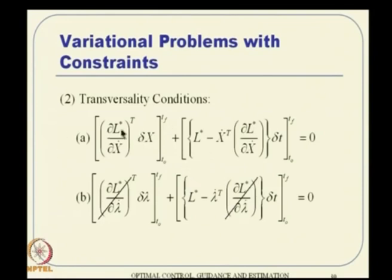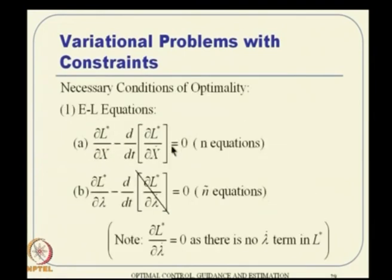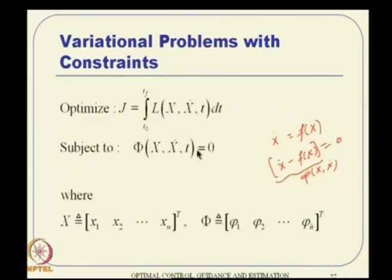For transversality conditions, the same applies: two things—with respect to x and with respect to lambda. Since lambda-dot is absent, any partial derivative with respect to lambda-dot is zero. We end up with: first, del L-star by del x minus d/dt of del L-star by del x-dot equals zero, the Euler-Lagrange equation; and second, del L-star by del lambda equals zero, which is the constraint equation embedded into the solution. The constraint equation gets embedded as part of the necessary conditions.